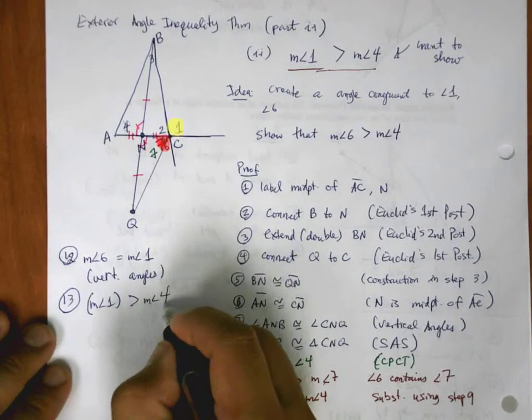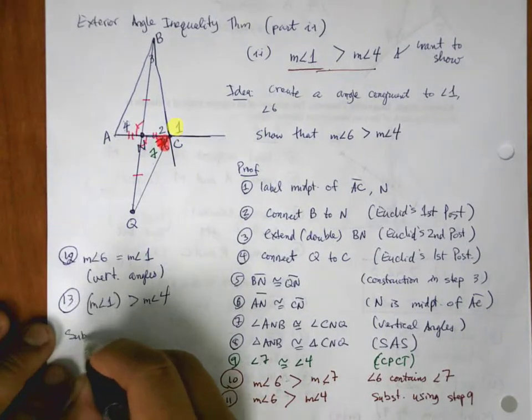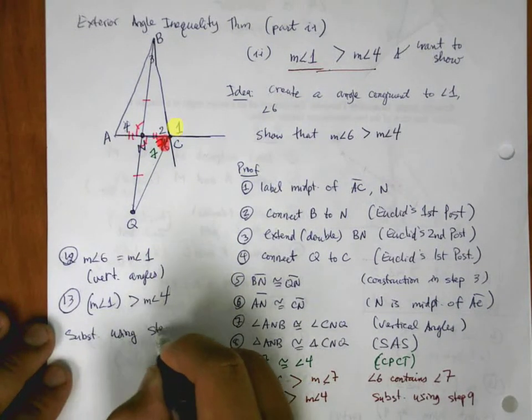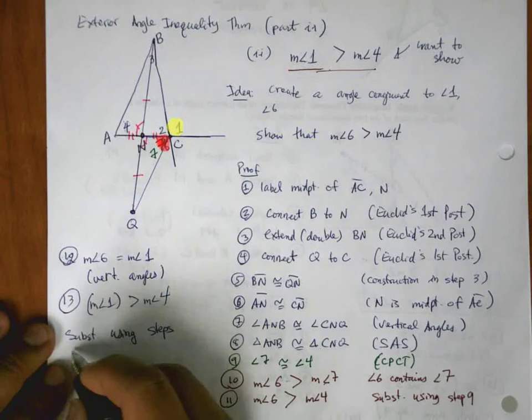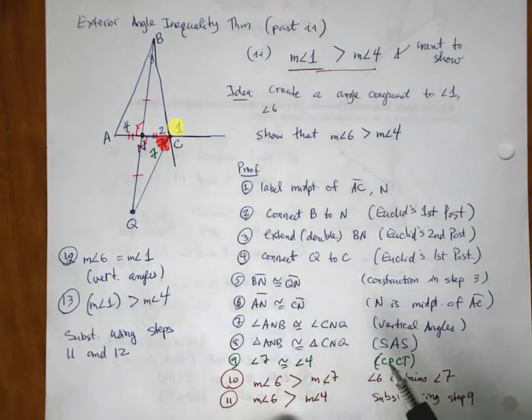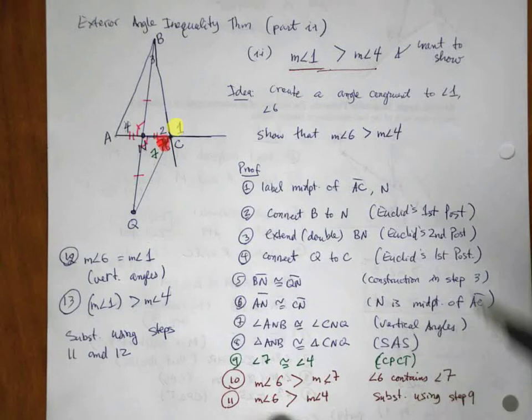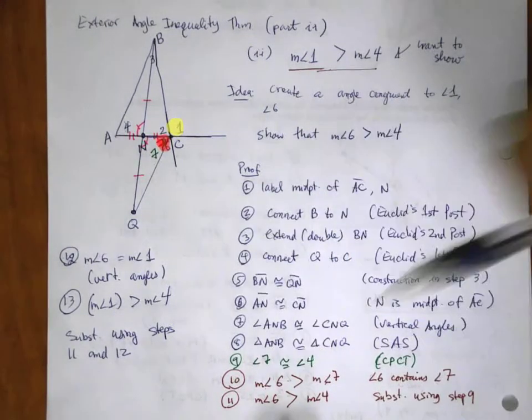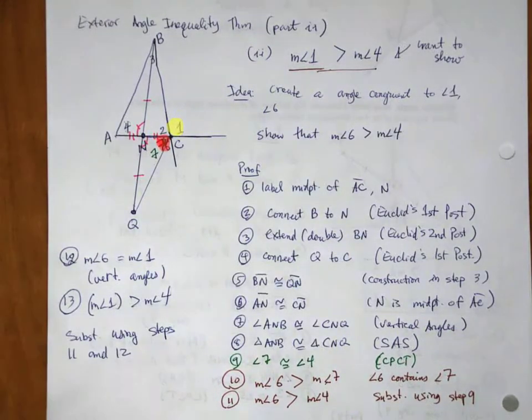So lucky 13, the measure of angle 1 is greater than the measure of angle 4. And this is substitution using really steps 11 and 12. So I take step 11, which is a statement that I had before, and then I take step 12 and I make the substitution 1 in for 6. Now there you have it. Part 2 is also complete.